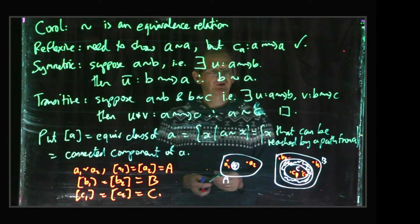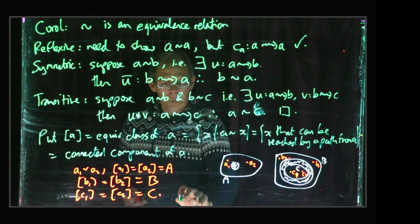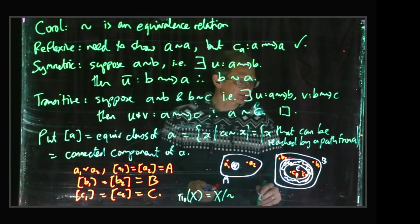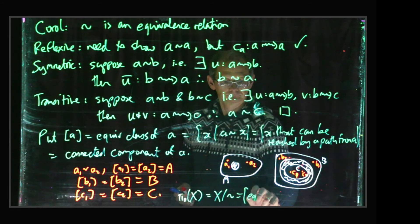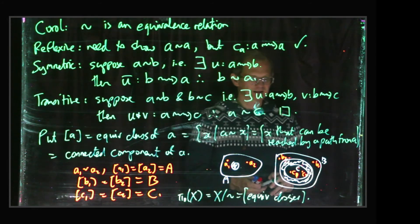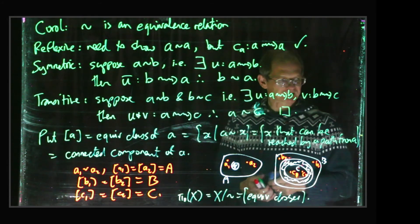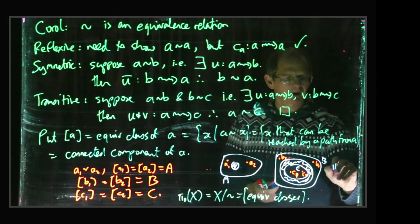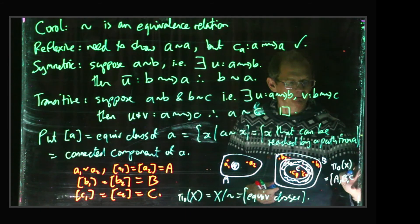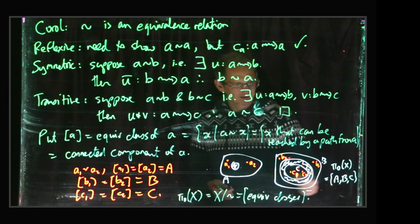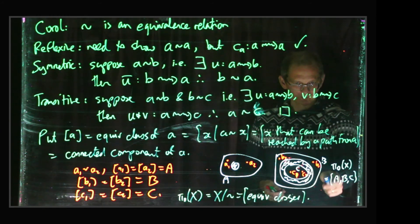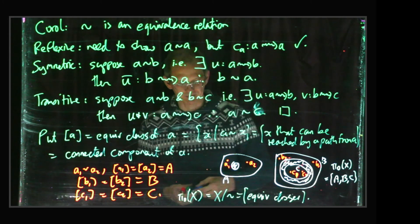And then, you know, we also define π₀(X) is X mod ~, this is the set of all equivalence classes. So in this particular, so for this particular picture here, we conclude that π₀(X) is this set of three elements. So each of these sets, capital A, capital B, capital C, each one of those sets is by itself a single element of π₀(X). So π₀(X) just has size 3, it just consists of these three points.